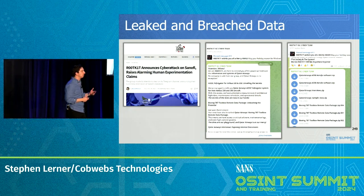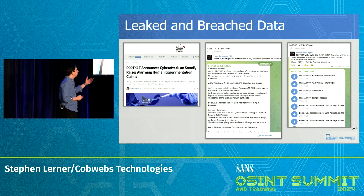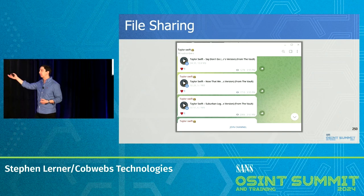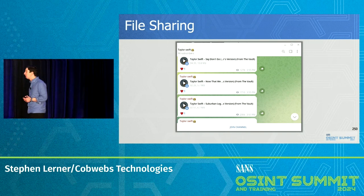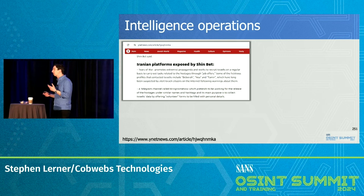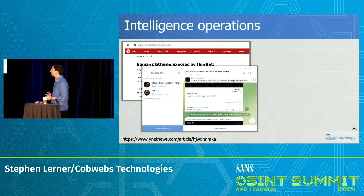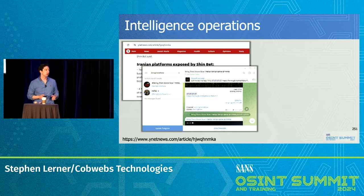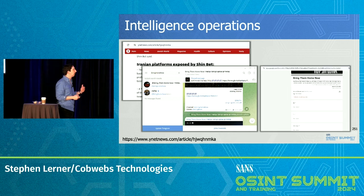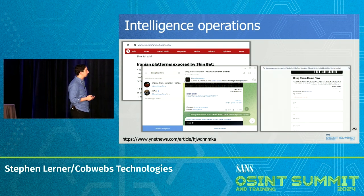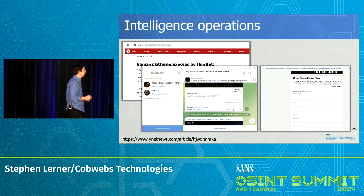This is a hacker group — they hacked Sanofi, the French pharmaceutical giant, and hacked Qatar Airways putting up some maintenance schedules. It's a place for file sharing. It's a place for intelligence operations: Iran was trying to recruit and trap Israelis who were looking to volunteer for the war effort in Israel. They had a fake Telegram group asking people to submit their name, phone number, and their Israeli national identification number — which could then be used against them in the future.